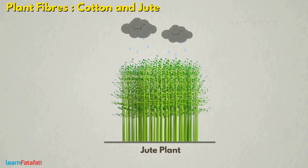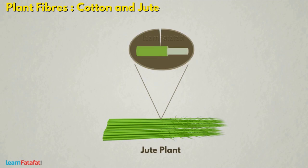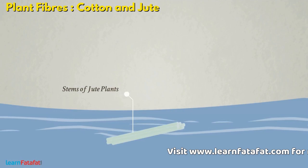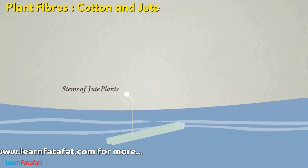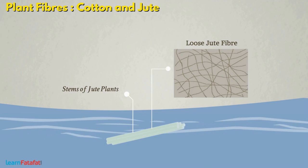Jute is cultivated in the rainy season. The jute plants are harvested at the flowering stage. Jute fibers are obtained from the outer skin of jute plants called ribbon. Fibers are also obtained from the stem of jute plants. Stems are bundled and kept in soft running water for a few days, during which the fibers become loose and can be easily separated. The process of extraction of jute fiber from the stem is called retting.